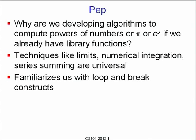Now you see why break is used — you can quit a loop early without declaring a variable and testing it in the next iteration. In many applications, repeating the beginning of the loop body would mess up your invariants, so it is much better to quit the loop as soon as you can. Why are we developing algorithms to compute powers of numbers, or pi, or e^x if we already have library functions? Because techniques like taking limits, numerical integration, and summing series are universal — you will use them again and again in scientific or engineering programming. Also, it familiarizes us with the loop and break constructs. There are other ways to write loops using the for construct and the do-while construct; while is universal — you can implement anything using while, though code might be more compact with a for loop, which we will see in the next lecture.